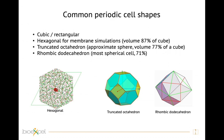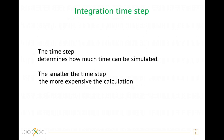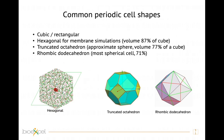When you build the box, you always have to ensure that the distance between your globular molecule and its periodic image is large enough that they don't see each other, otherwise your results will be biased. It is important that the distance between the protein and the edge of the box is larger than half of the cut-off.